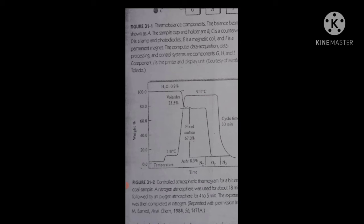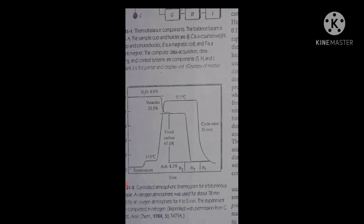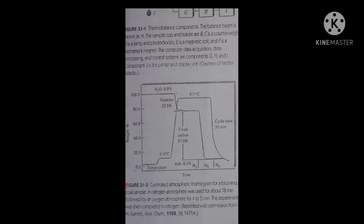In the second graph, we see that the first temperature is 110 degrees centigrade, then it goes to 950 degrees centigrade. The cycle time is 30 minutes. We increase the temperature from 110 to 950. At 950, you can see that this range is ignitable.